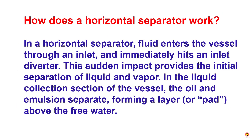How does a horizontal separator work? In a horizontal separator, fluid enters the vessel through an inlet and immediately hits an inlet diverter. This sudden impact ensures separation of the liquid and vapor. In the liquid collection section of the vessel, oil and emulsion separate, forming a layer above the free water.